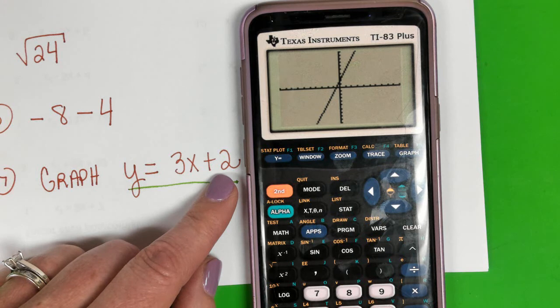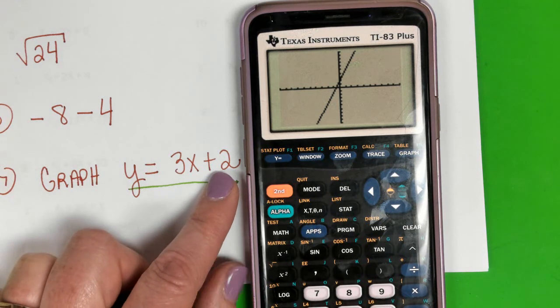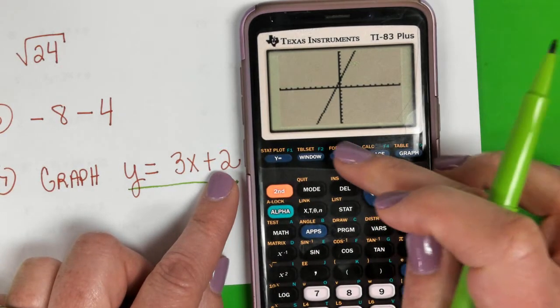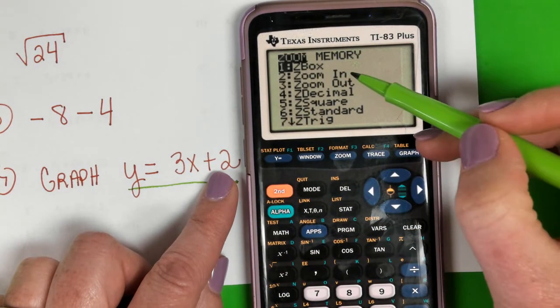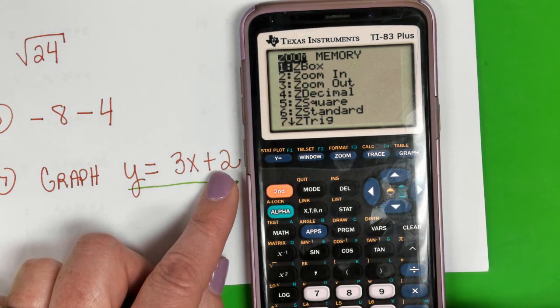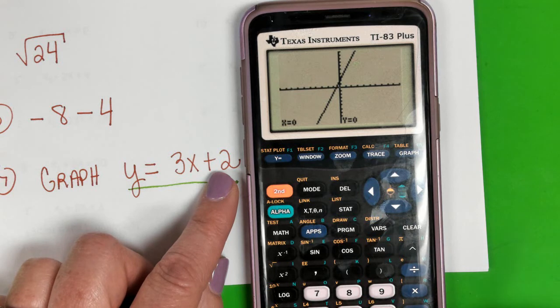Bam! There's our graph. Okay, and I think most of the time you're going to be able to see your graphs, but I do want you to see this zoom button. You can zoom in and zoom out. If I wanted to zoom out, I would press 3, and then you have to hit enter so that it actually zooms out—not always a great option.